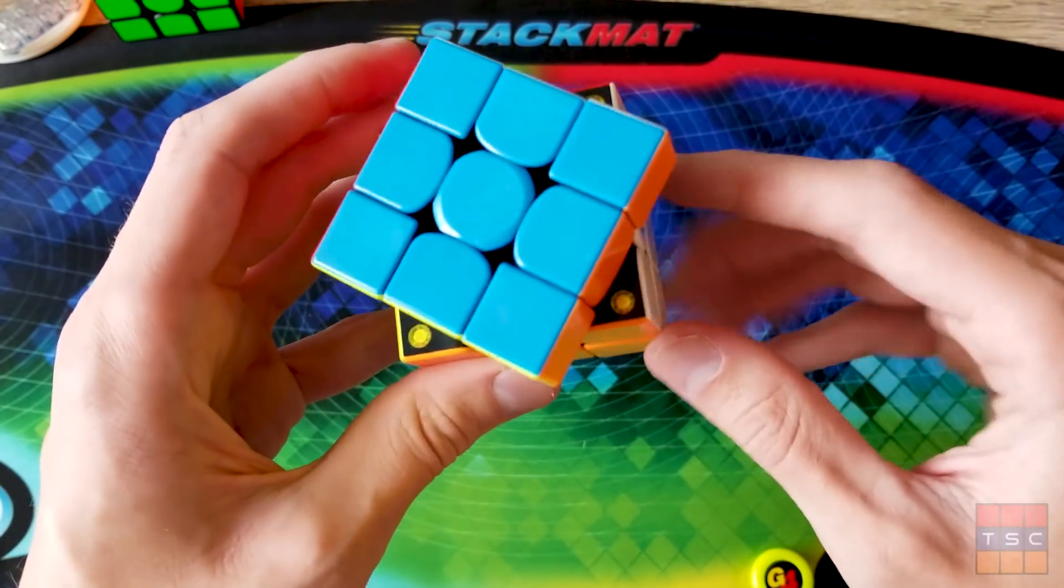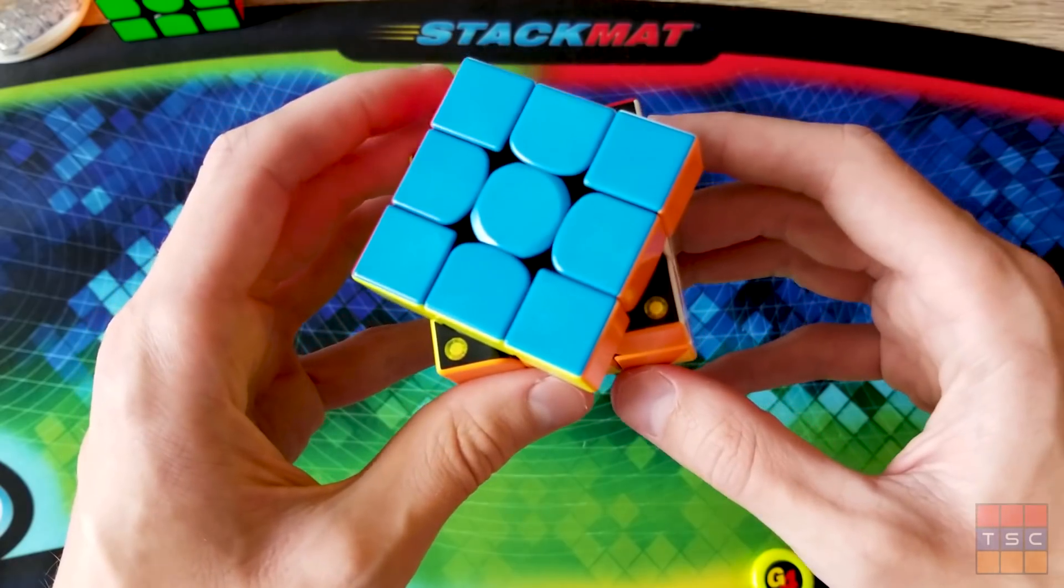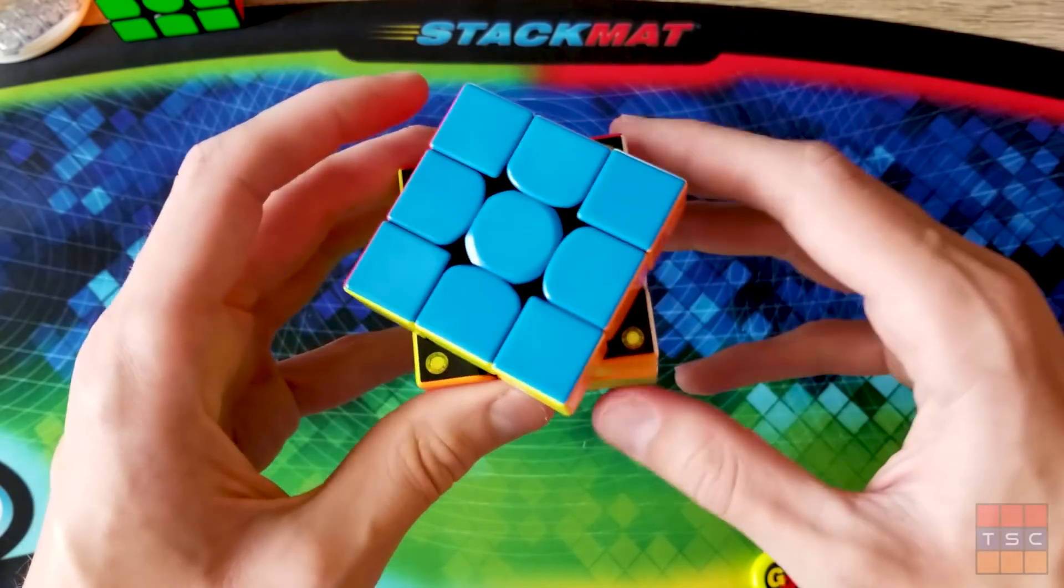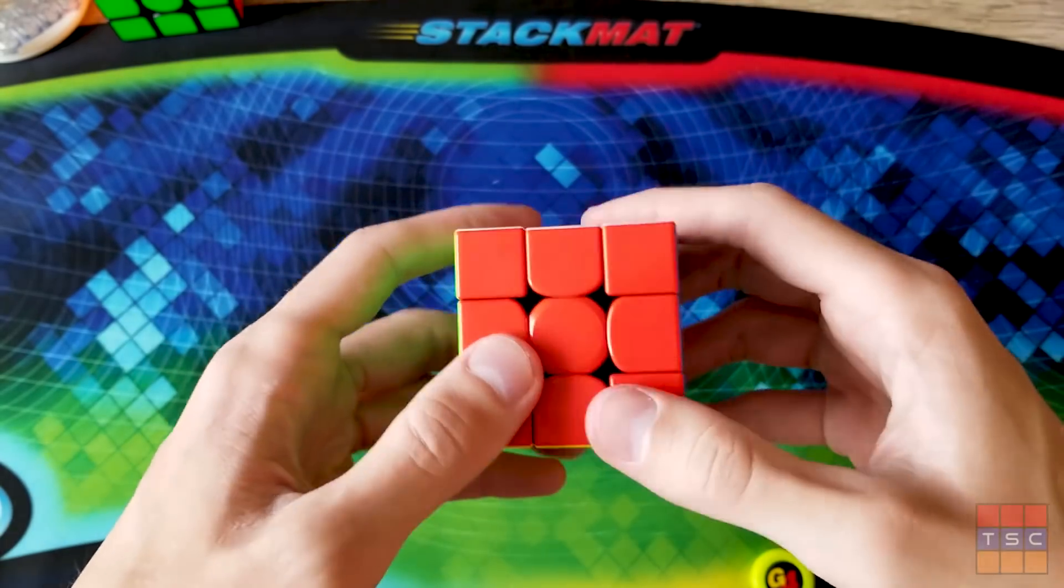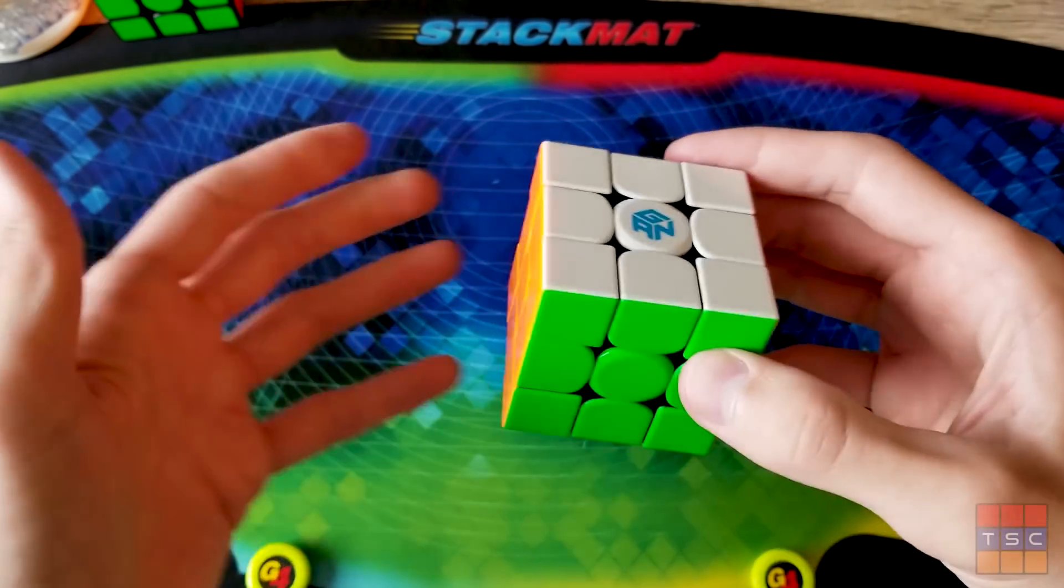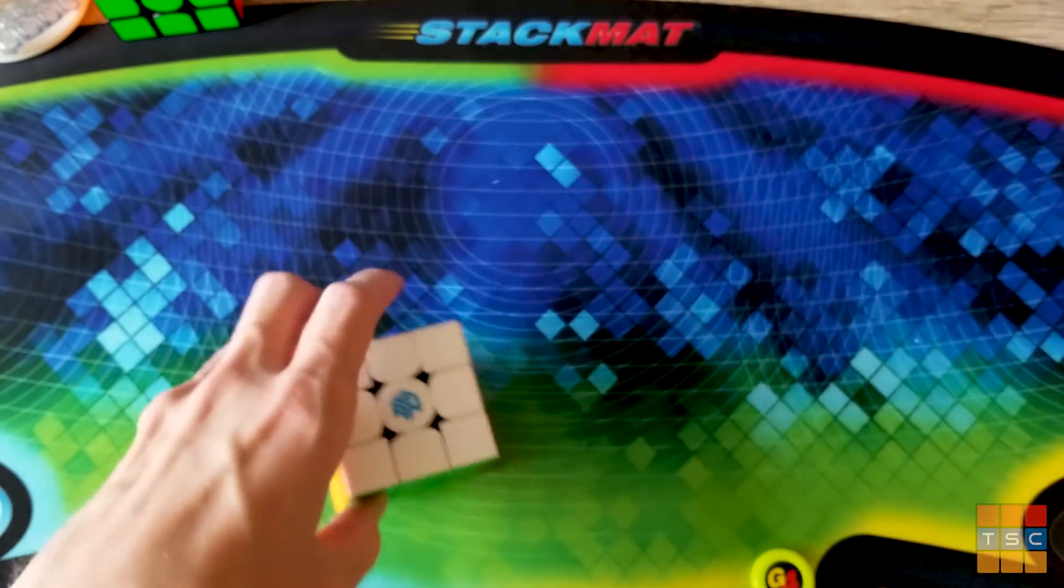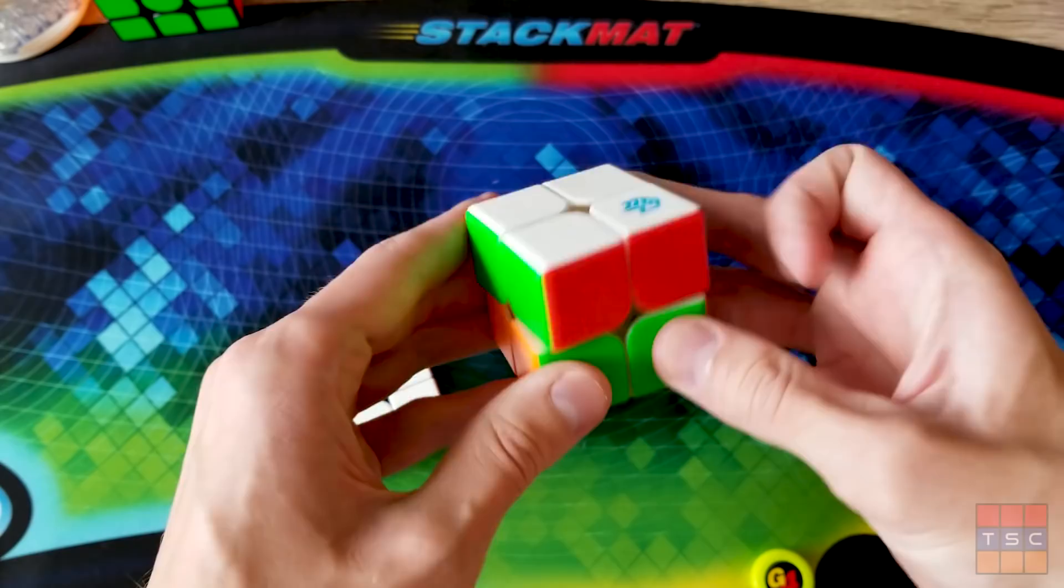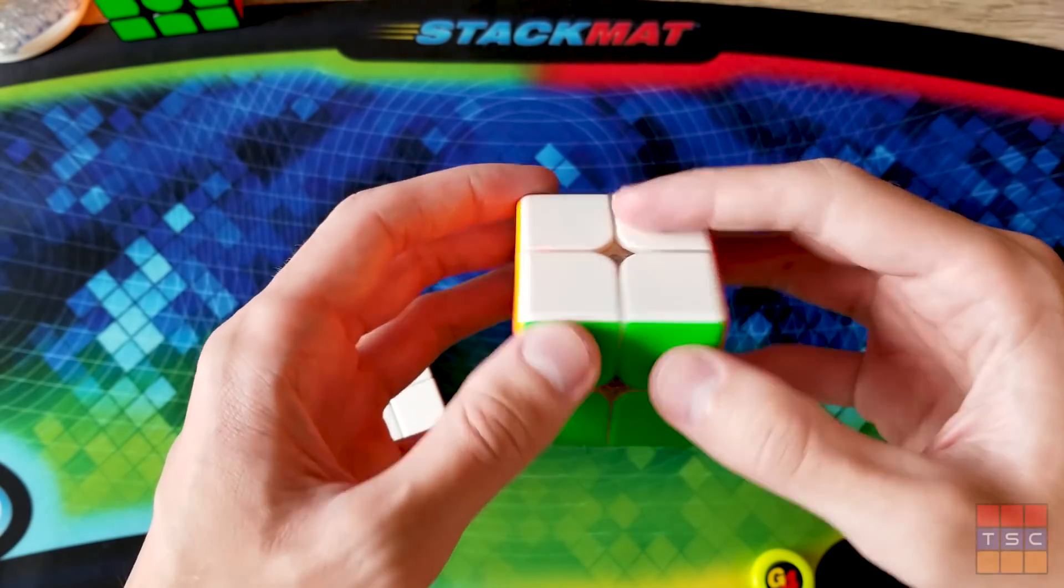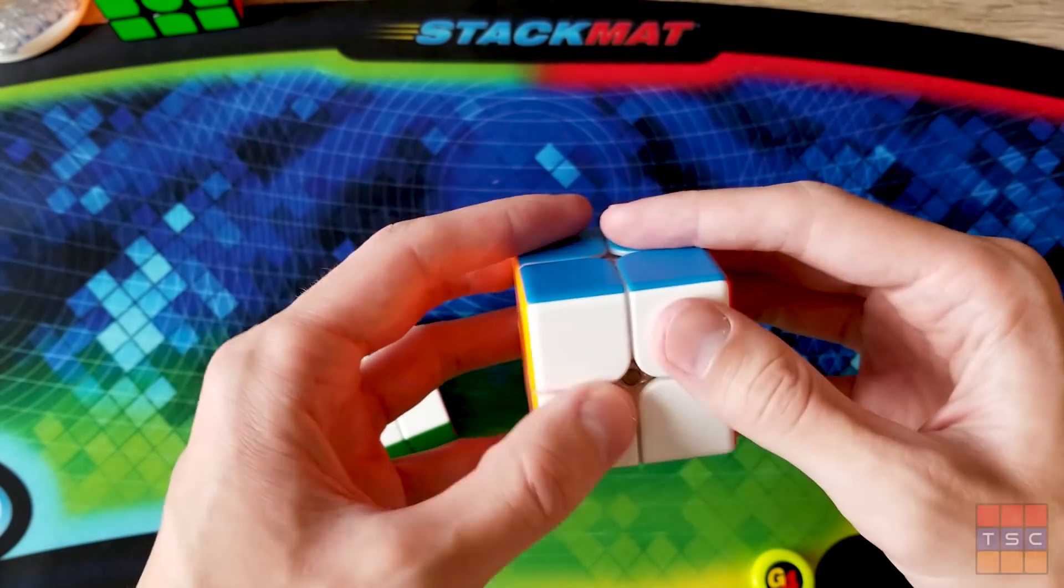We also have this new magnet positioning system that they introduced in the GAN 460 where the magnets are placed right here. So you can see them right away. Feeling it, I can tell you that the plastic is not slippery at all, which I wasn't too worried about though.